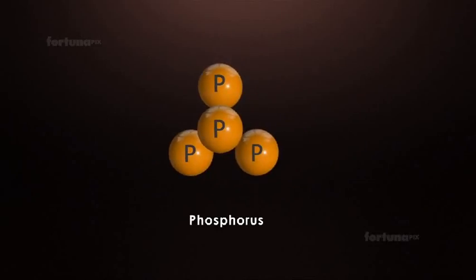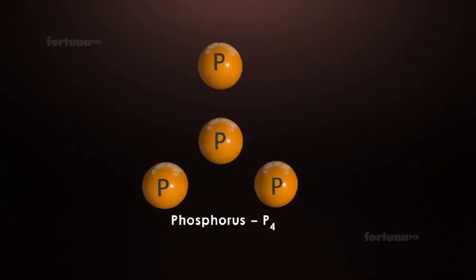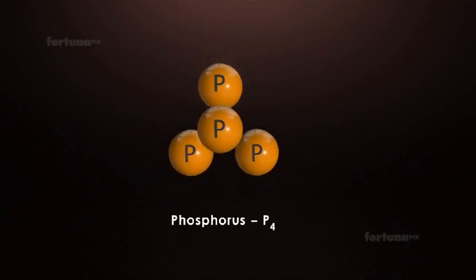The phosphorous molecule contains 4 phosphorous atoms, so its atomicity is 4. Molecules of these types are said to be tetraatomic.